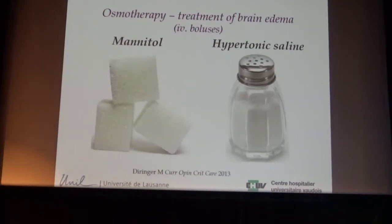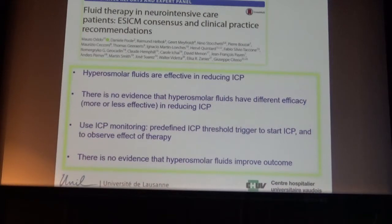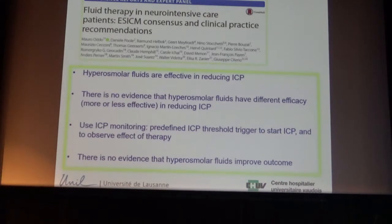If you ask whether to prefer mannitol or hypertonic saline, we don't really know what's best. We use more hypertonic saline than mannitol, but based on a large systematic review, all we can say is that these hypertonic fluids are effective in reducing ICP but there's no evidence that one is superior to another. If you treat intracranial hypertension, there is no evidence prophylactic treatment works. You must monitor ICP — the same logic as treating systemic hypertension requires knowing blood pressure.